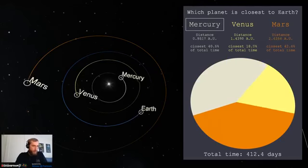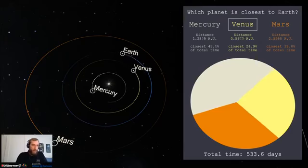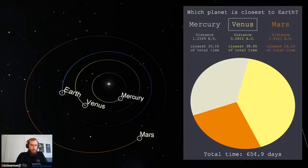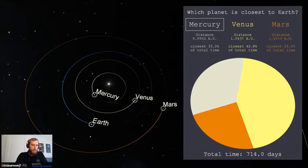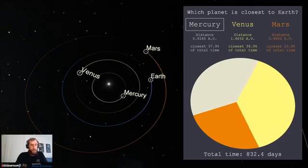You've got the name of each planet up top. And whenever that planet is closest to the Earth, there'll be a box around that planet's name. Then the computer is tracking how far the planet is from Earth at any given time. And then we're building up statistics down below, keeping a running tally of how much time that planet spends closer to the Earth.